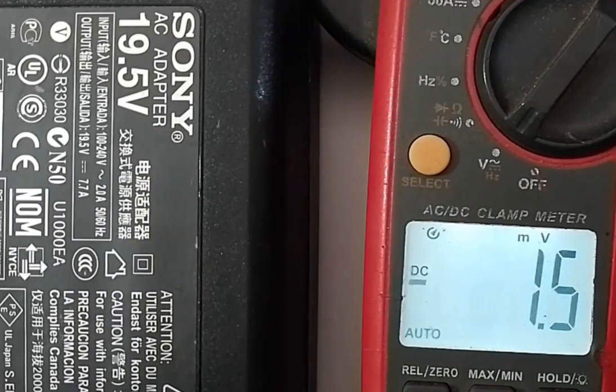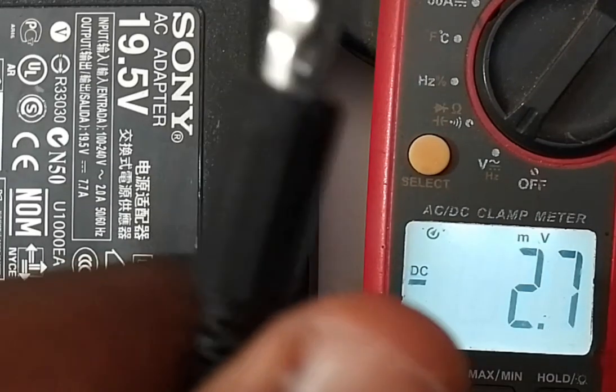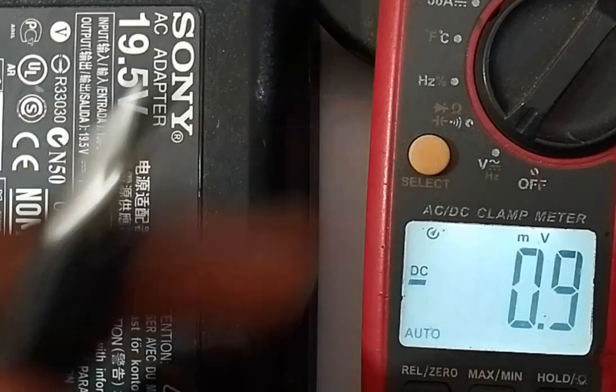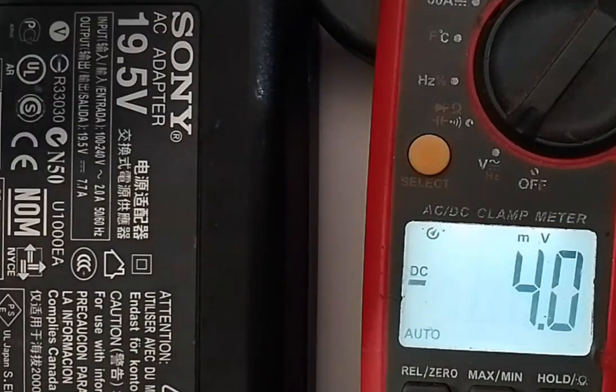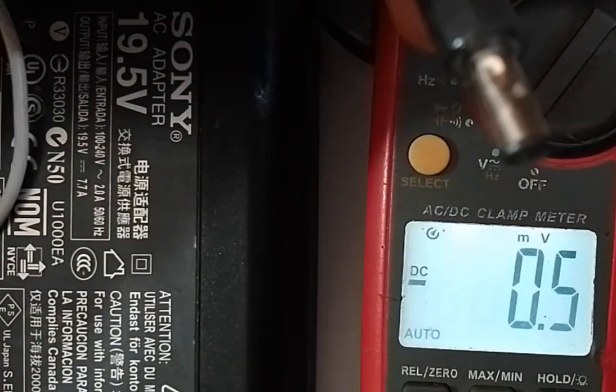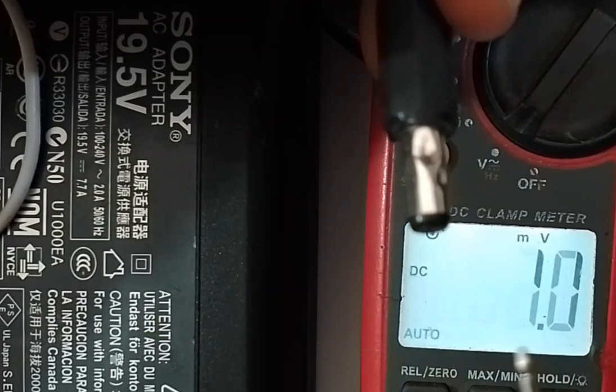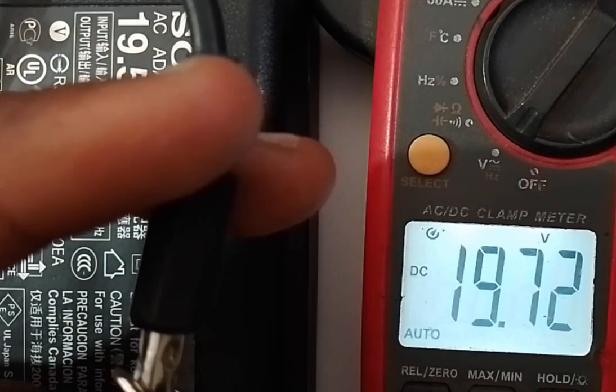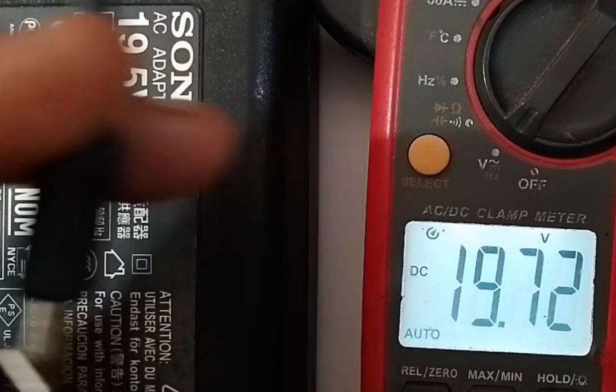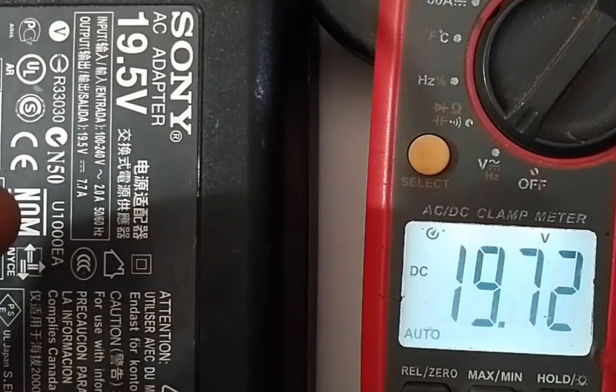This is a 19.5V AC adapter, meaning 19.5V is the terminal voltage that will be applied to the load. And when measured with a multimeter, here is what we got, 19.72V. It drops further to 19.5V when connected to a load.